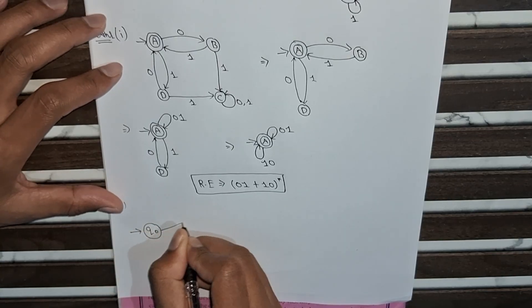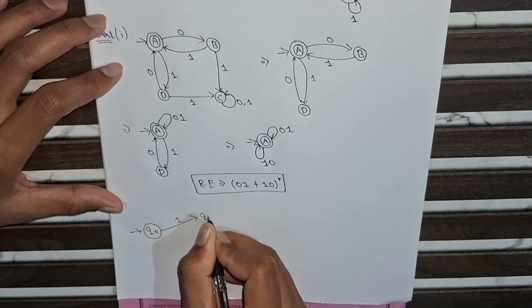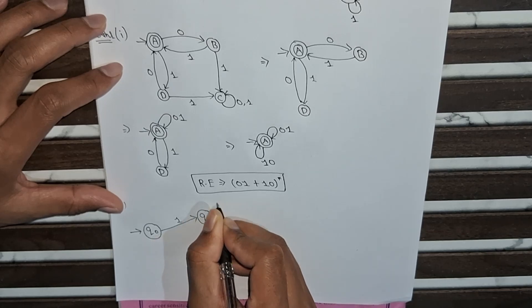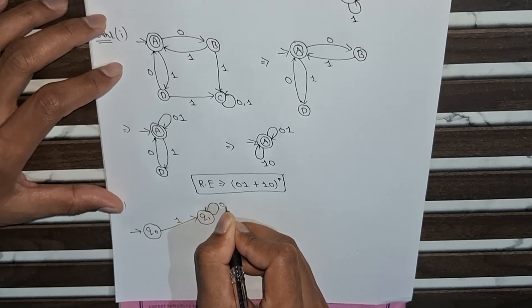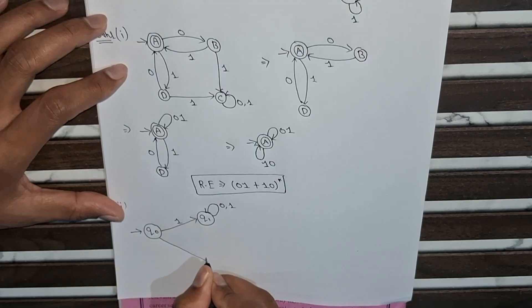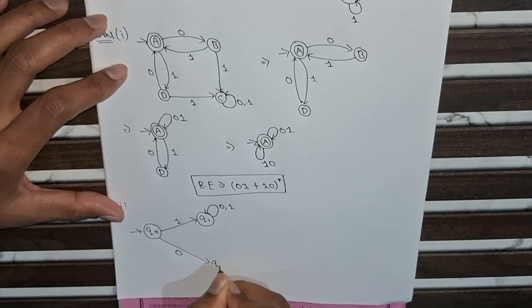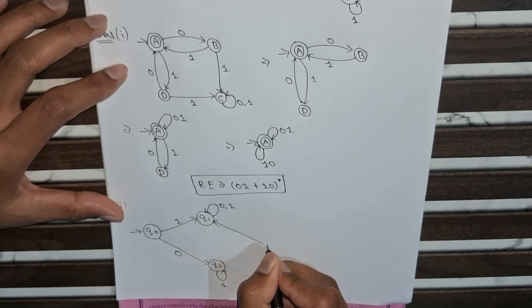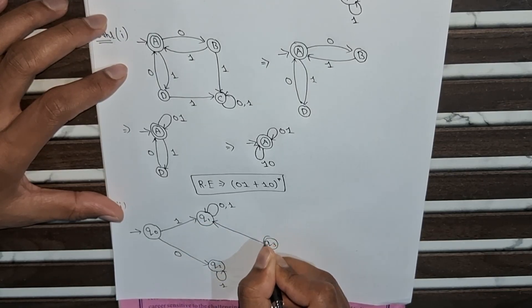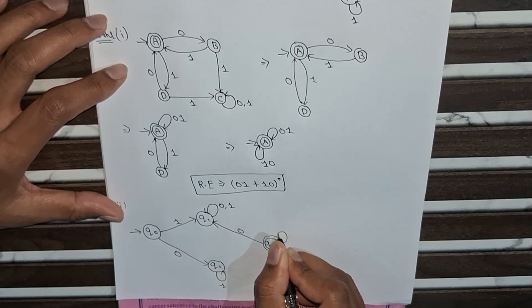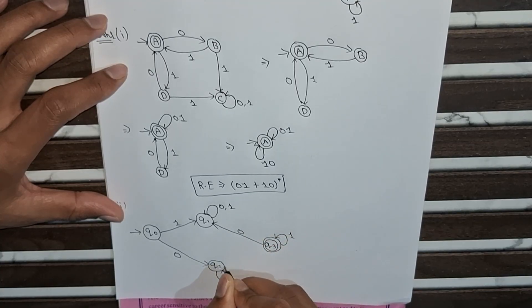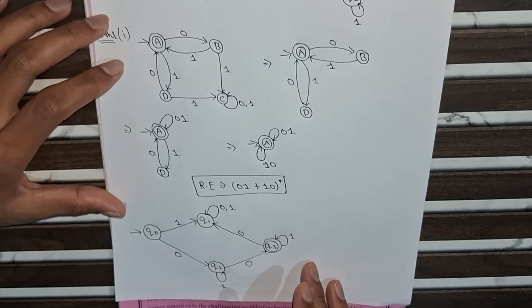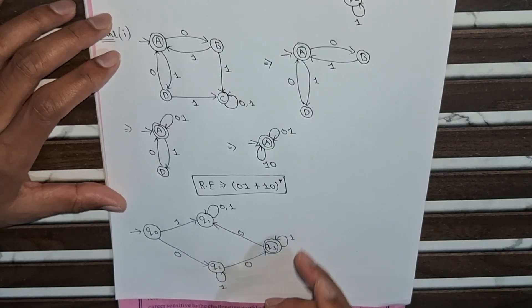For the second part: q0 is the initial state. With input symbol 1 it goes to q1, which has a self loop with 0,1. From q0 with input symbol 0 it goes to q2, and q2 has a self loop with 1. We will first check if there is any dead state.